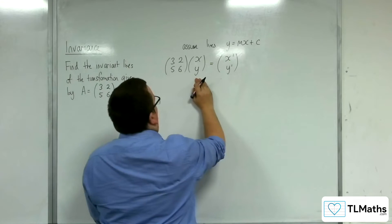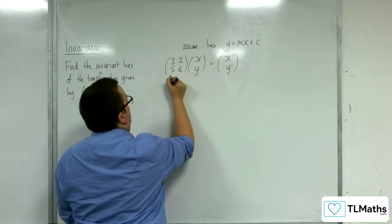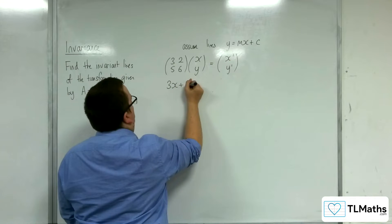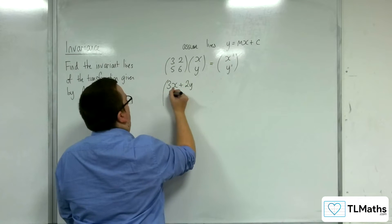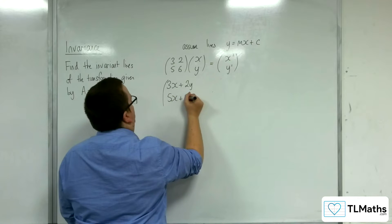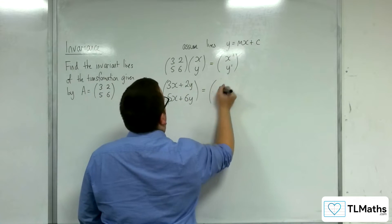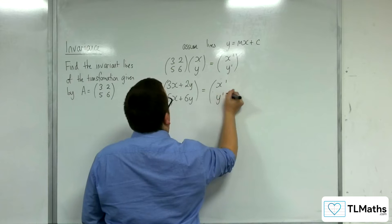So if I multiply this through, I'm going to get 3x plus 2y and I'm going to get 5x plus 6y. And that's going to be equal to the x prime, y prime.